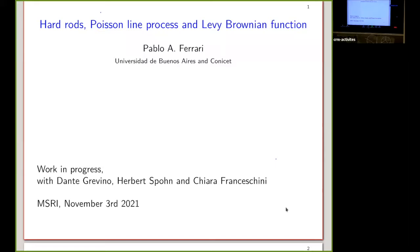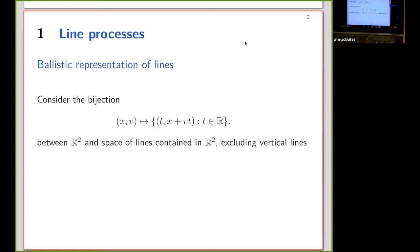This talk concerns two objects: hard rods and Poisson line processes, and the Lévy-Brownian functions. Both things are well known, and I am going to establish a relation between these two objects. Let me start with some well-known things about line processes, white noise, and Lévy-Brownian functions.